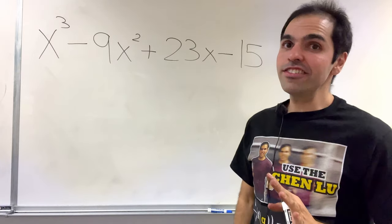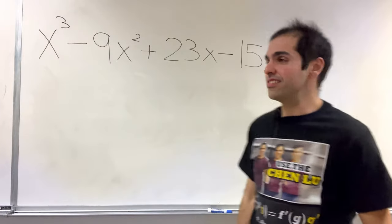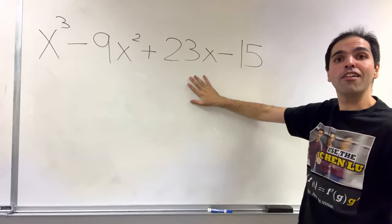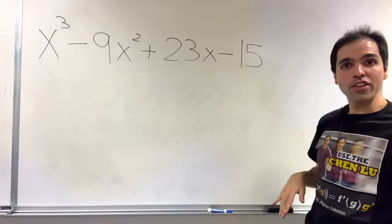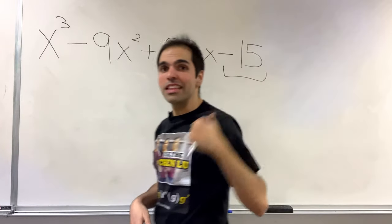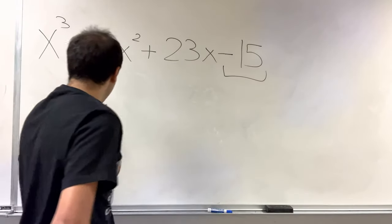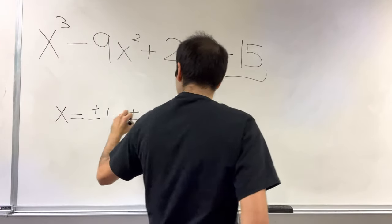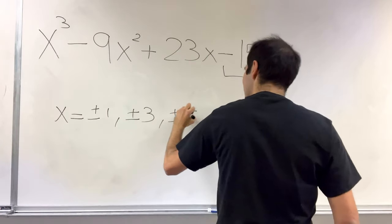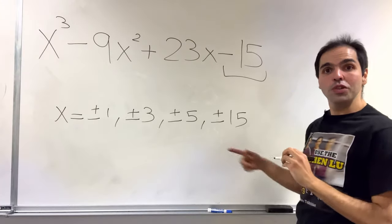Thanks for watching, and here's a math fact with applications to projectiles and missiles. Consider the following polynomial. Let's try to find the zeros. Well, by the rational roots theorem, the zeros divide minus 15, so it could be plus or minus 1, plus or minus 3, plus or minus 5, plus or minus 15.